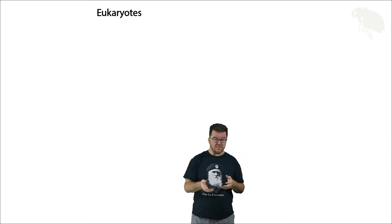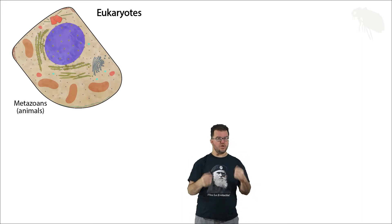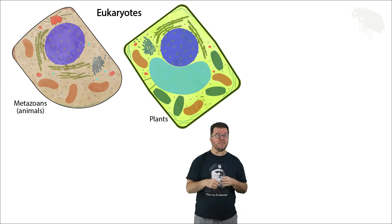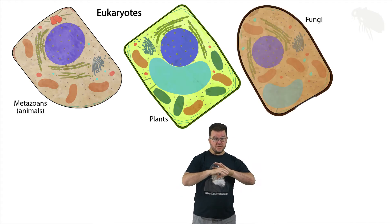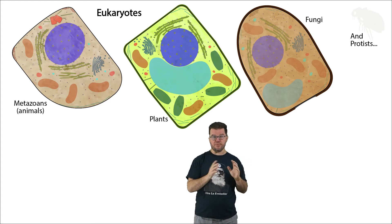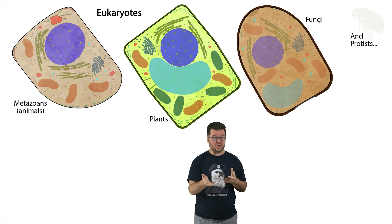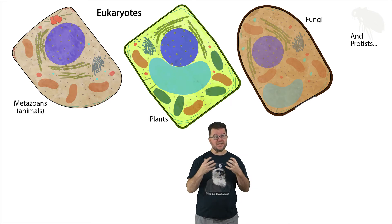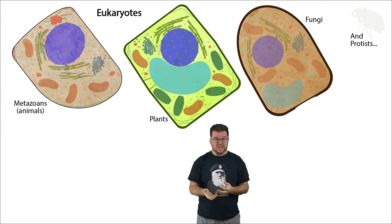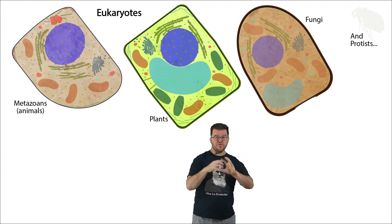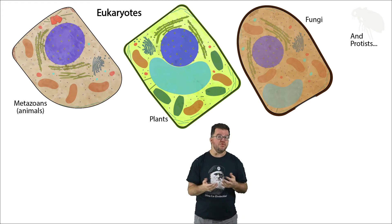There are two big categories of cells that we've identified. The first big category are called eukaryotic cells, and this includes a pretty wide range of organisms that all share a core cellular structure. This includes the metazoans or the animals — which includes us — as well as plants, fungi, and a whole bunch of other kingdoms collectively called protists. Pay attention to protists, because there are a lot of really important organisms in there that are not animals, plants, or fungi, but they are all composed of eukaryotic cells.